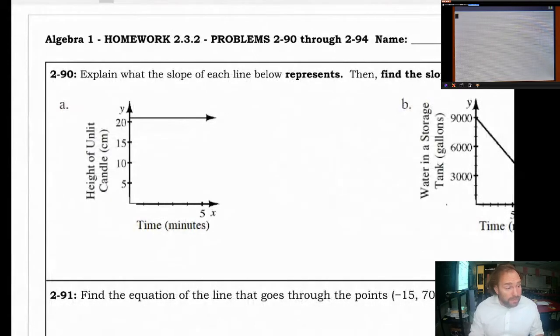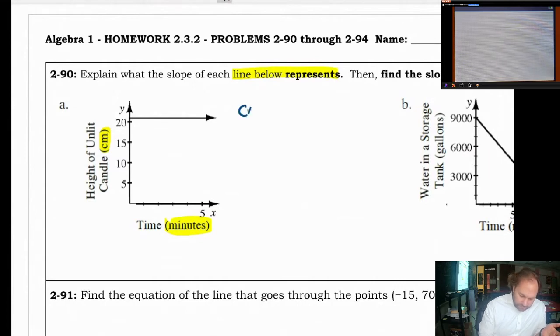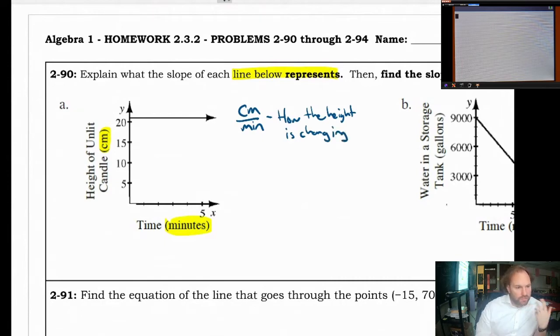Problem 290. We're going to explain what the slope of each line below represents, and then find the slope given its units. And give its units. So, as far as what it represents, that would be what you really want to think about as the units there. In the case of question A, this is centimeters per minute. And if we think about that, that's the height of an unlit candle over time. That's what's going on. So, it represents how the height is changing.